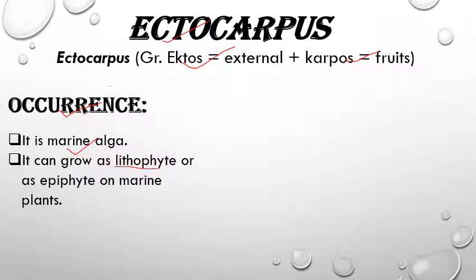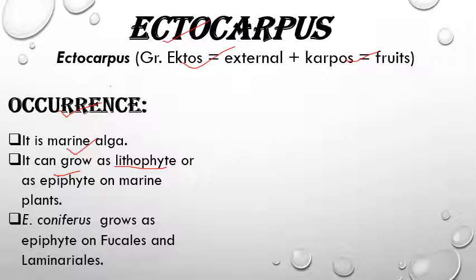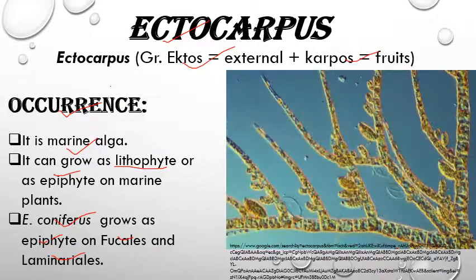Ectocarpus mainly grows in marine water, but there are some exceptions — it can grow as a lithophyte on rock surfaces, or as an epiphyte on other aquatic plants. In marine water, one species grows as an epiphyte on kelps — brown algae belonging to the orders Fucales and Laminariales.